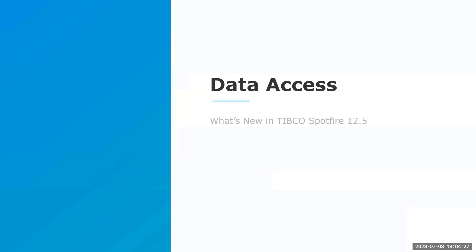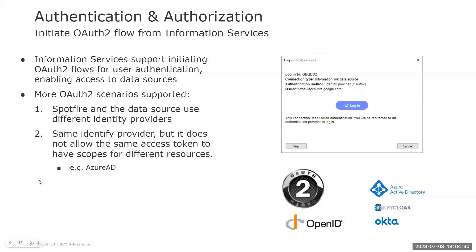Let's start with Data Access. As with previous releases, we continue adding more and more OpenID Connect and OAuth use cases into Spotfire. Information Services now support initiating OAuth flows when needed to authenticate users to access a specific external data source. This is useful where, for example, Spotfire and the external data source use different identity providers, or when using the same identity provider, for example Azure AD, but it does not allow scopes for different resources in the same access token requested through OIDC.